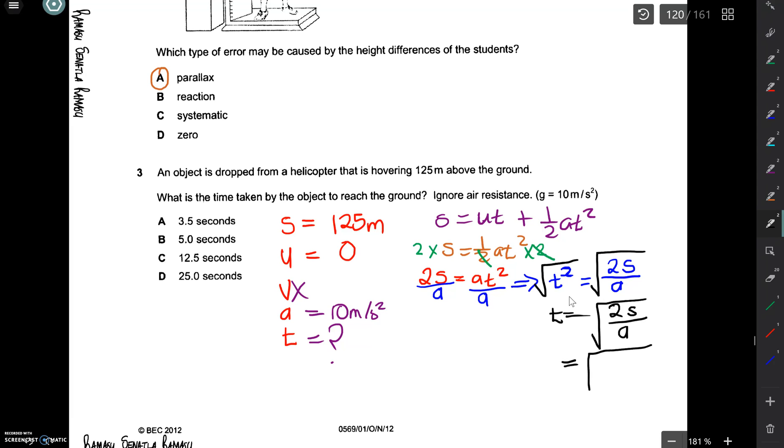The square root of 2S, so two times our S. Our S was 125 meters. So that's two times 125 over our A. It's 10 meters per second squared. So then this is the square root of 250 over 10. So then this is the same thing as the square root of 25. And so we get 5 here. So this is 5 seconds. So our answer here is B. 5 seconds.